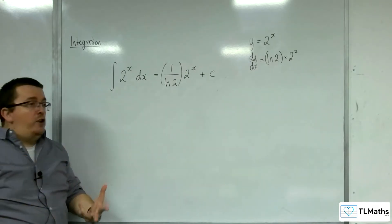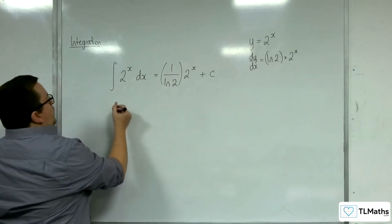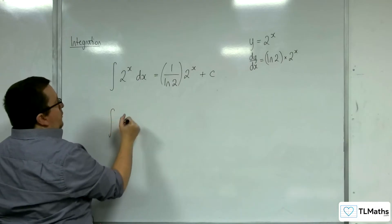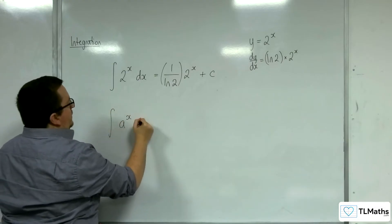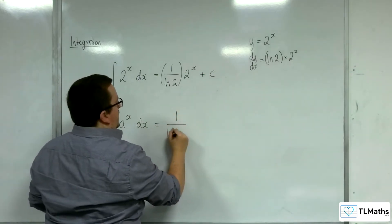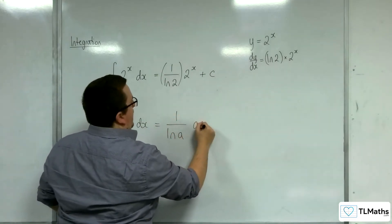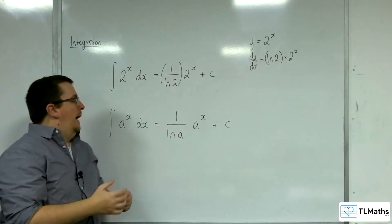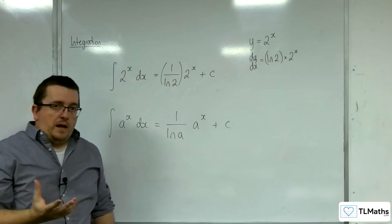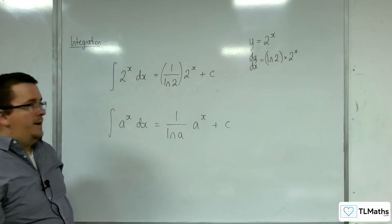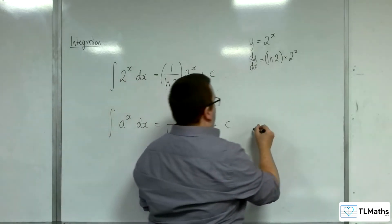So in general, we can say that the integral of a to the x dx is equal to 1 over log a times a to the x plus c. Now, obviously that comes with the condition that a is greater than 0 here, just so we're clear.